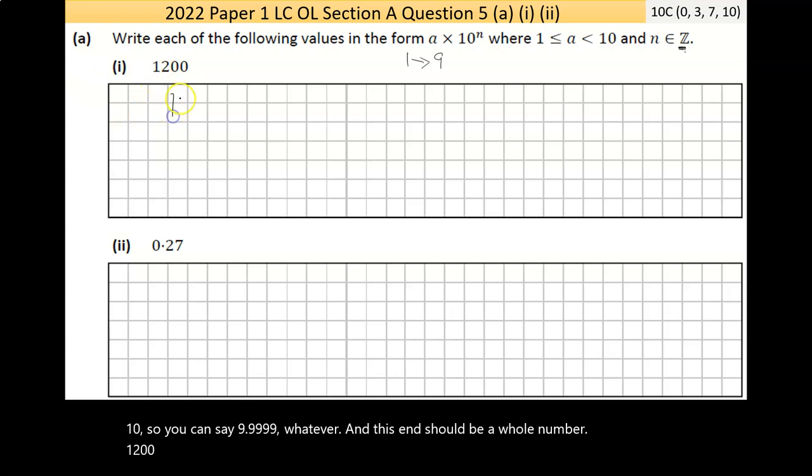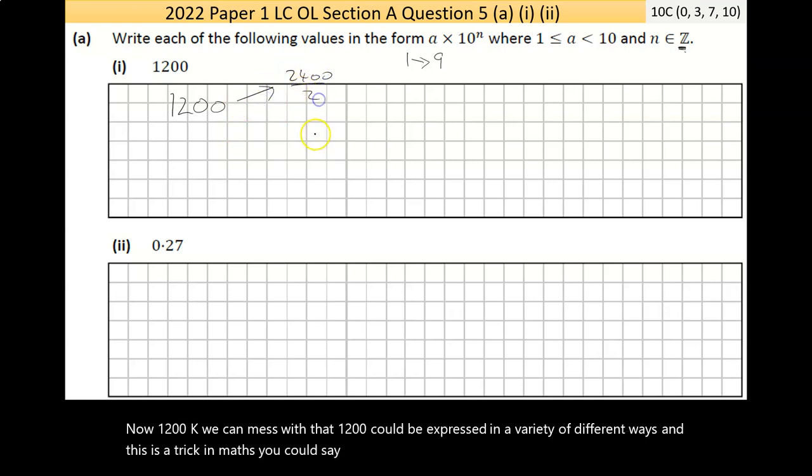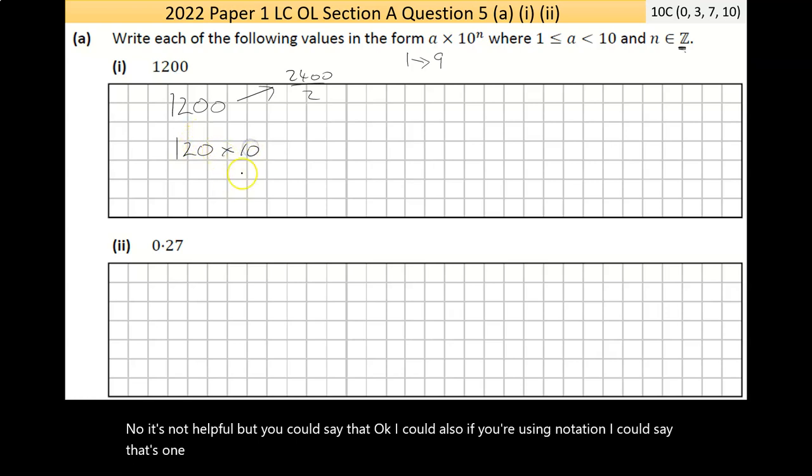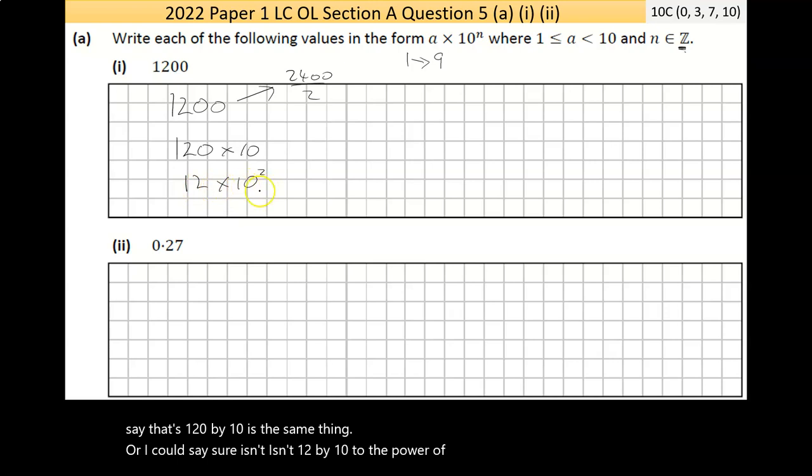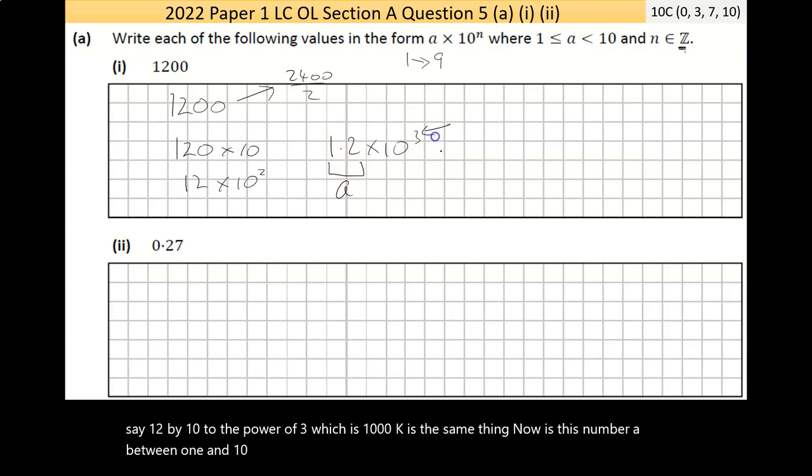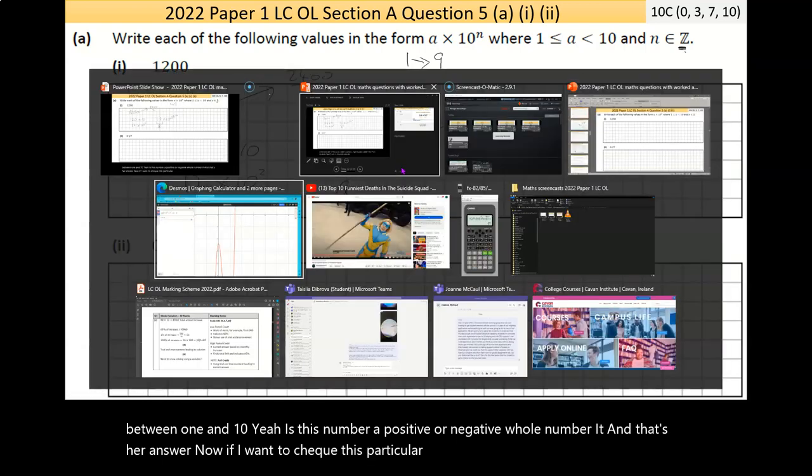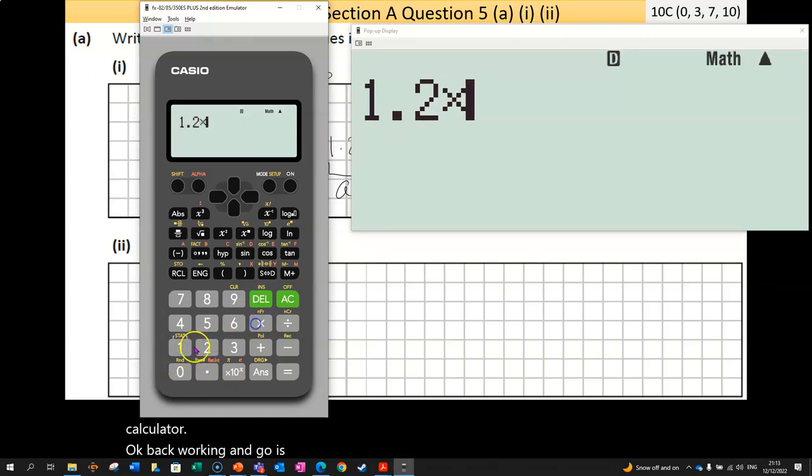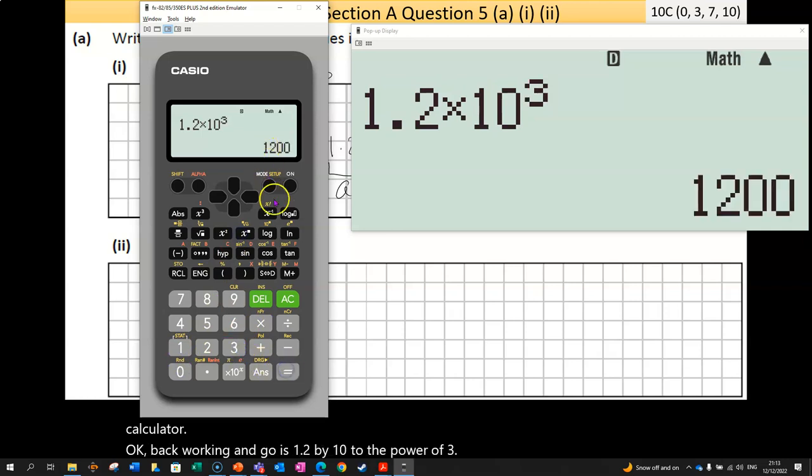Now 1200, we can mess with that. 1200 could be expressed in a variety of different ways. And this is a trick in maths. I could say that's 120 × 10 is the same thing. Or I could say, isn't 12 × 10^2, or 12 × 100 equal to 1200? Or I could say 1.2 × 10^3, which is 1000, is the same thing. Now, is this number A between 1 and 10? Yeah. Is this number a positive or negative whole number? It is. And that's our answer.